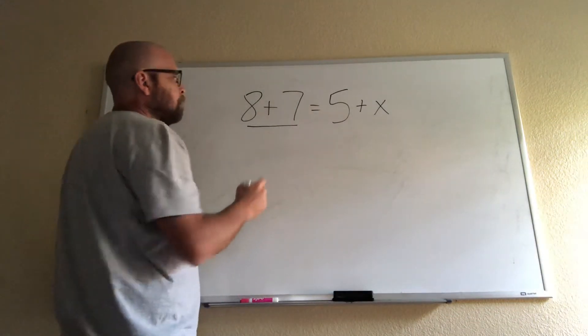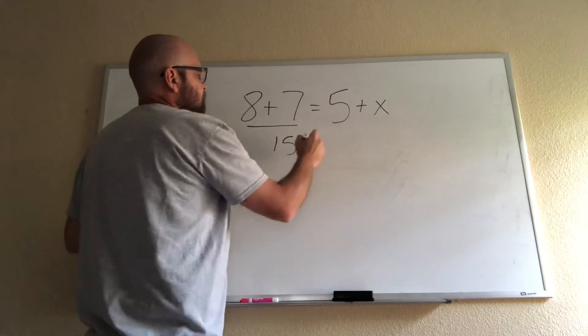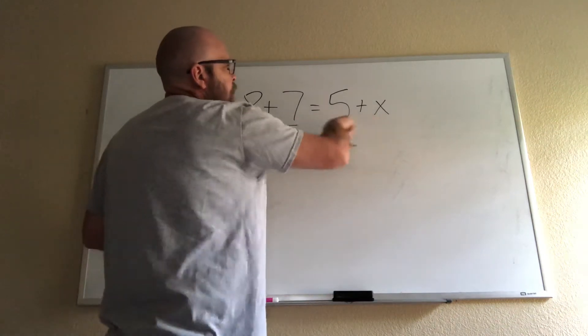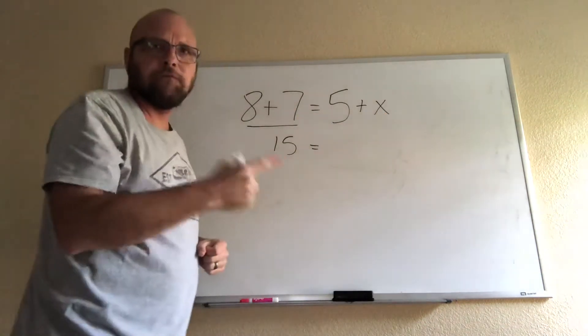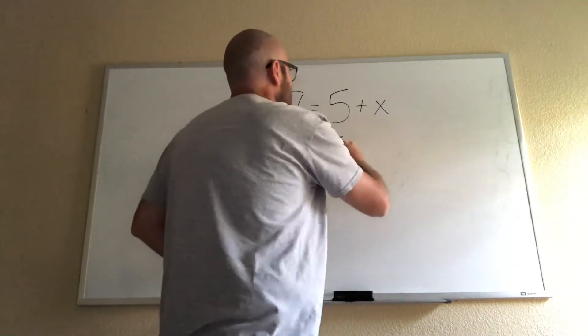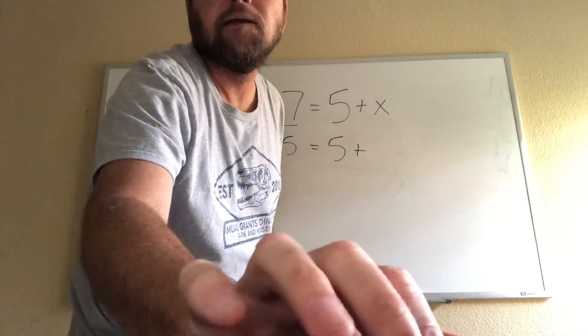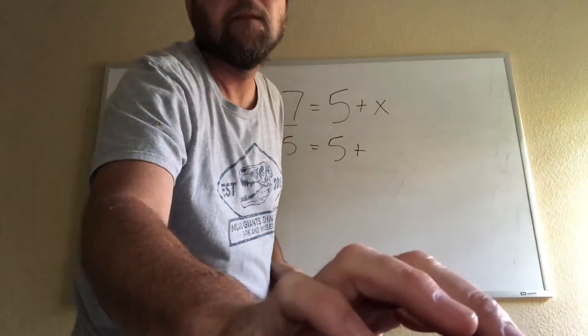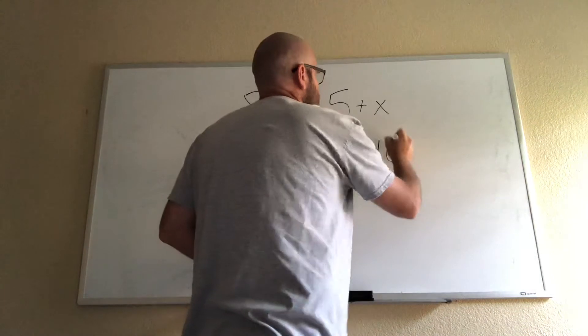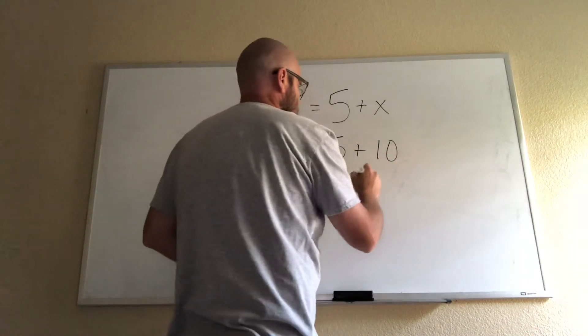I need to figure out what I put in for X to make it equal 15. So 5 plus what equals 15? And the answer is 5 + 10 = 15, so X is going to equal 10. So that's the first one.